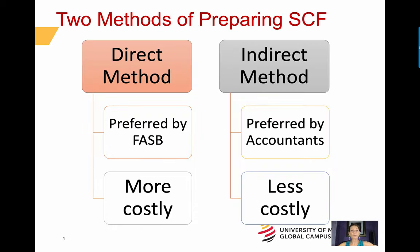There are two methods of preparing a Statement of Cash Flows. FASB prefers the Direct method. However, the Direct method is more time-consuming to prepare and therefore more expensive for clients. Thus, more companies use the Indirect method. A Statement of Cash Flows prepared using the Direct method begins by subtracting cash payments from cash receipts to derive net cash provided by or net cash used by operating activities.